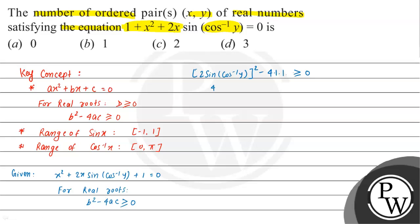Simplifying, the 4s cancel and we get sin²(cos⁻¹y) ≥ 1. Taking the condition further, this means either sin(cos⁻¹y) ≤ −1 or sin(cos⁻¹y) ≥ 1.